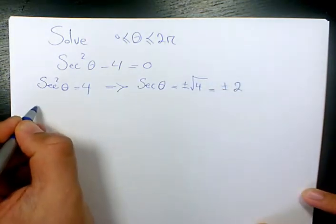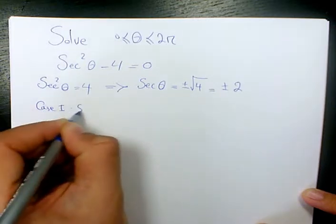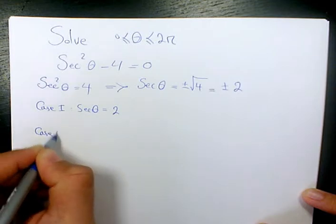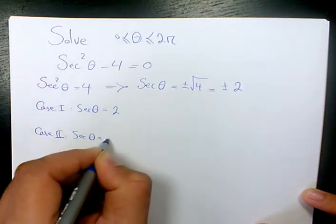So we have two cases, case 1 when secant theta is 2 and case 2 when secant theta is negative 2.